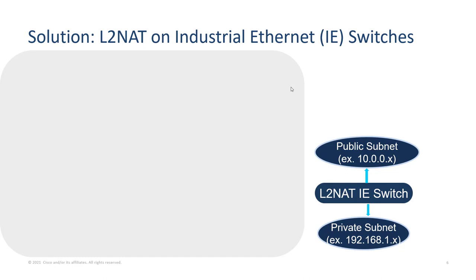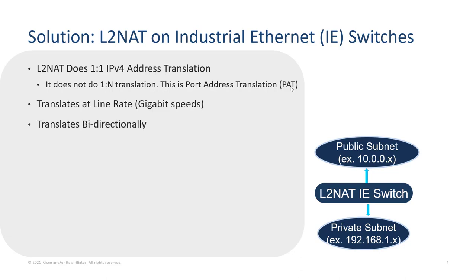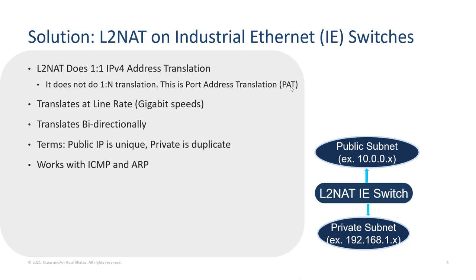When talking about Layer 2 NAT, the IE switch performs translation from private or duplicate IP addresses to public or unique ones — we'll use the terms private and public a lot. For Layer 2 NAT, it's a one-for-one translation: every HMI in machine one has a unique public IP address, and the HMI in machine two has a different unique public IP address. It is not one-to-N like a home network. It operates at line rate, bi-directionally, works with ICMP and ARP, and the translation can apply to any Layer 3 IP address.